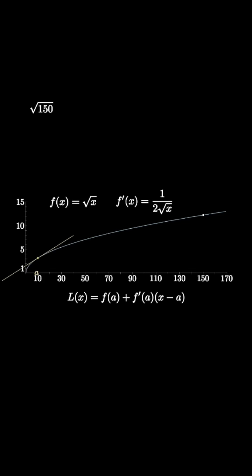Using the derivative of the square root function, we see that l of x equals the square root of a plus 1 over 2 times the square root of a times x minus a. If we imagine a as being 144,